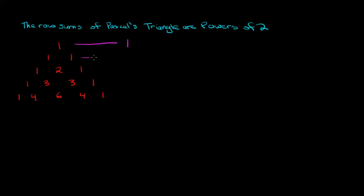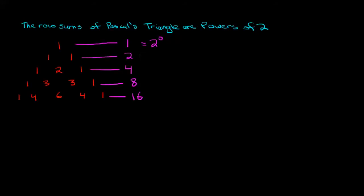If I look at the next row, the sum of those elements is two, and if I look at the next one I see that the sum is four, and then I get eight on the next row, and then I get 16 on the next row. That's kind of an interesting property because we can see that one is equal to two to the power of zero — this is the zeroth row — and two is two to the power of one, four is two to the power of two, and eight is two to the power of three, etc.